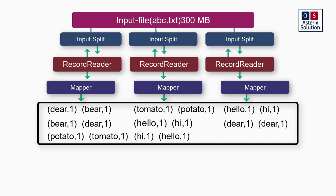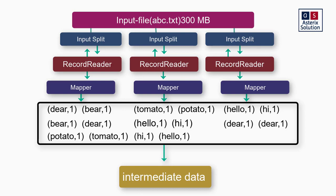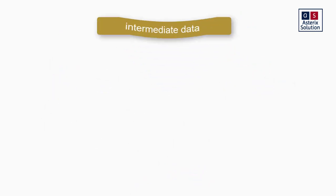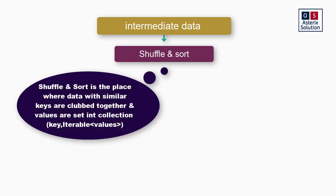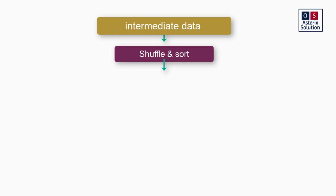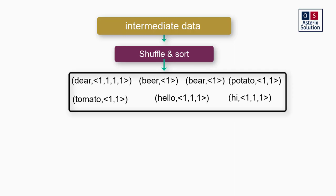This data emitted by the mappers — where the key is now Text and the value is IntWritable — is called intermediate data. It is in a random format and needs to be passed somewhere to be sorted. There can be one key with multiple values, but currently there are repetitions in the keys. This intermediate data is forwarded to the shuffle and sort phase — the magic layer of Hadoop — where data with similar keys are clubbed together and their values are put into a collection.